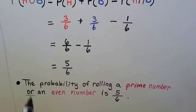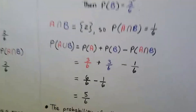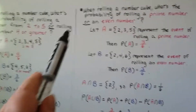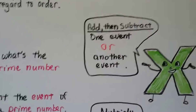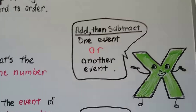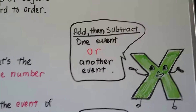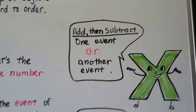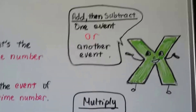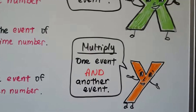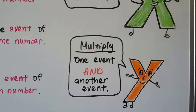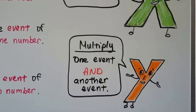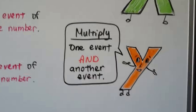Notice how I kept underlining the word 'or.' Everywhere you looked, I underlined the word 'or.' When you see 'or,' you can pretty much tell you're going to add and then subtract. In the next video, we'll talk about when it says 'and' — we're going to multiply when it says one event AND another event.